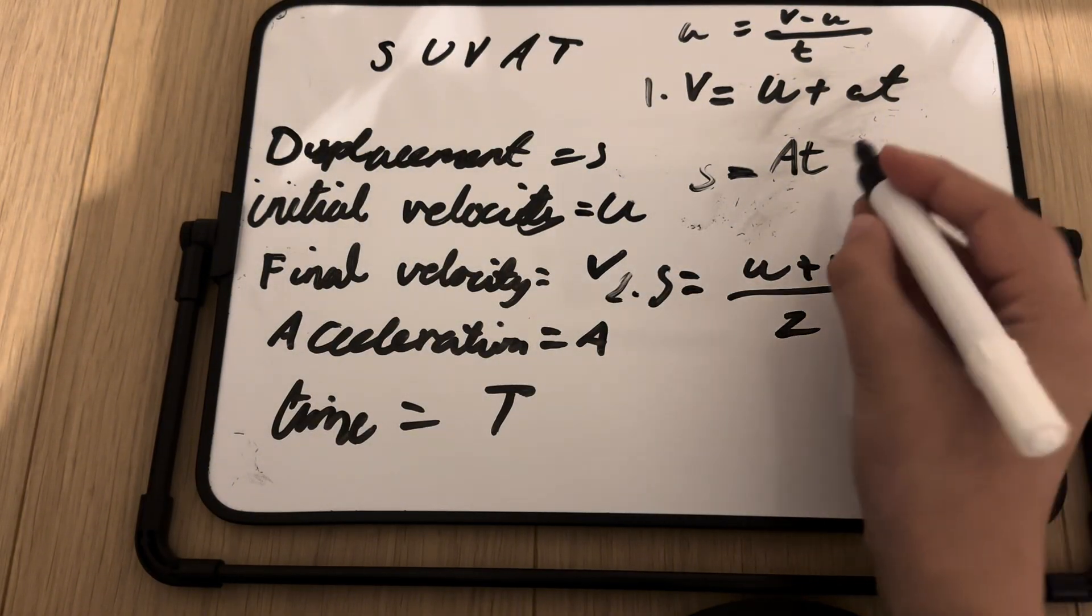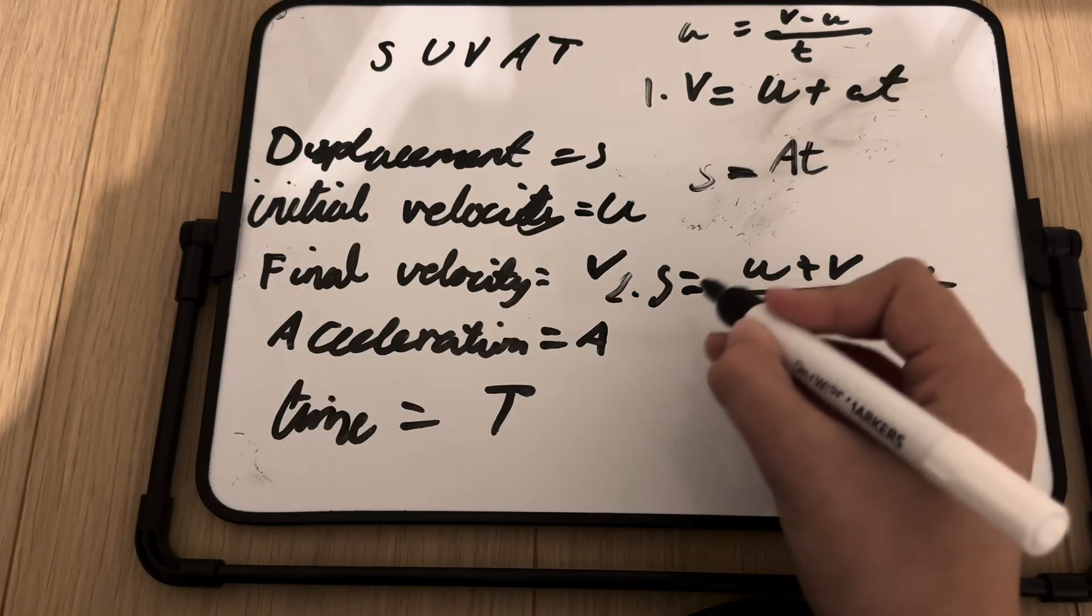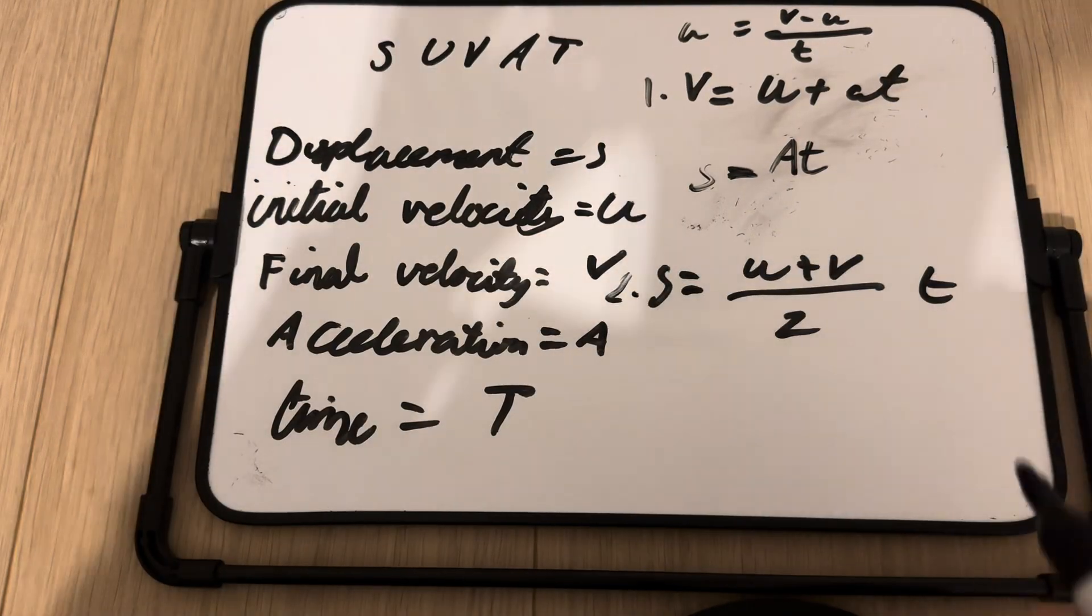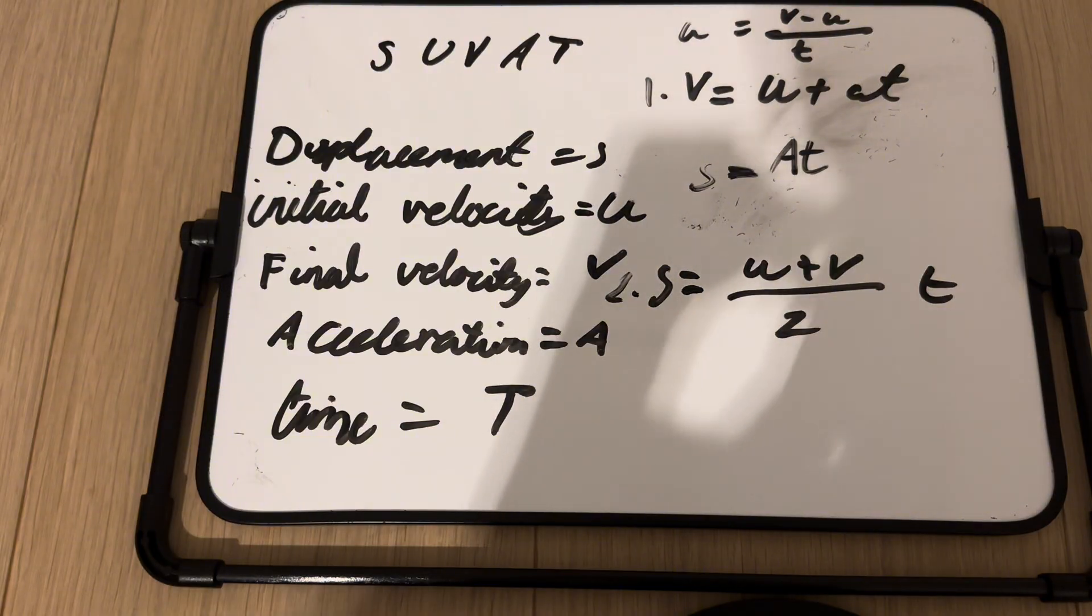So, and since it's the average velocity multiplied by T, then we get this as our second kinematic equation.